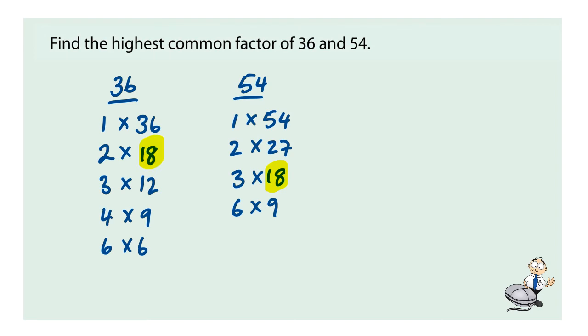So that's the full set of factors. And we see from the list 18 is the largest number that both lists have in common, so the highest common factor of 36 and 54 is 18.